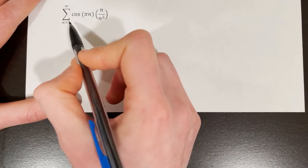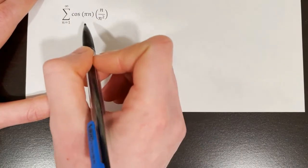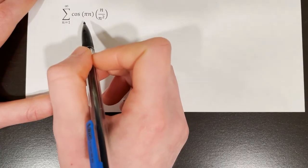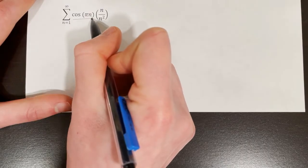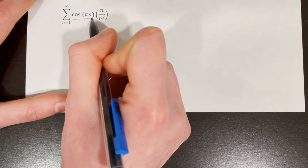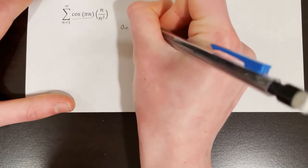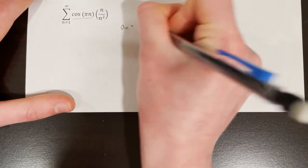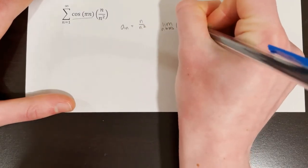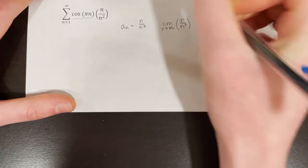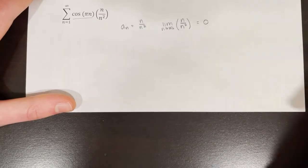Here's another example. We're looking at the series from n equals 1 to infinity of cosine of pi n times n over n squared. This is an alternating series because cosine of pi n acts as the alternator, making terms positive then negative. What's left over is a sub n, which in this case is n over n squared. We verify the limit as n approaches infinity of n over n squared equals 0, since n over n squared equals 1 over n and the limit of 1 over n is 0.